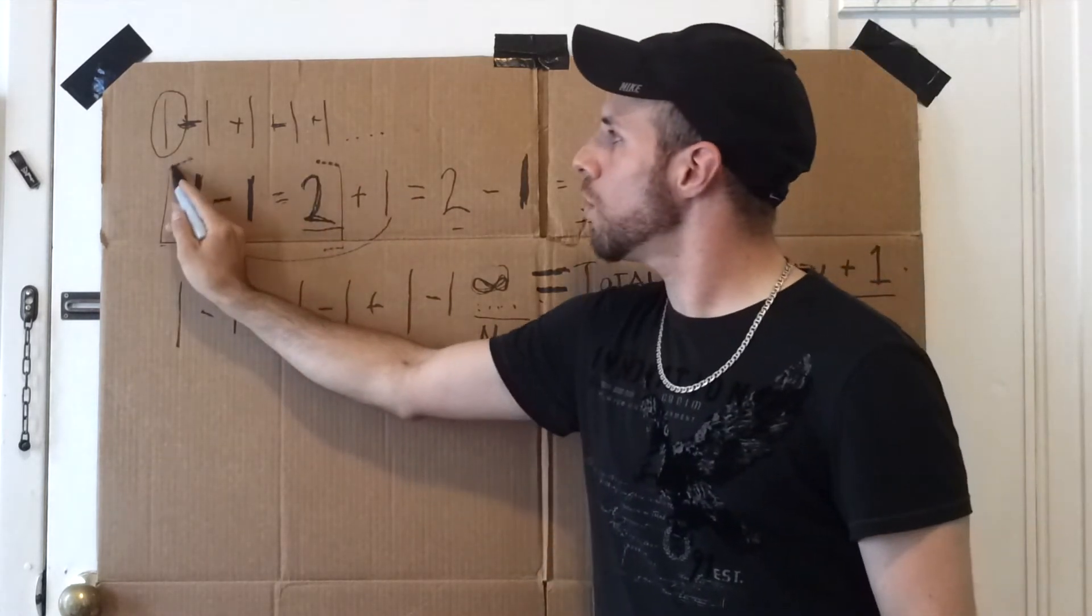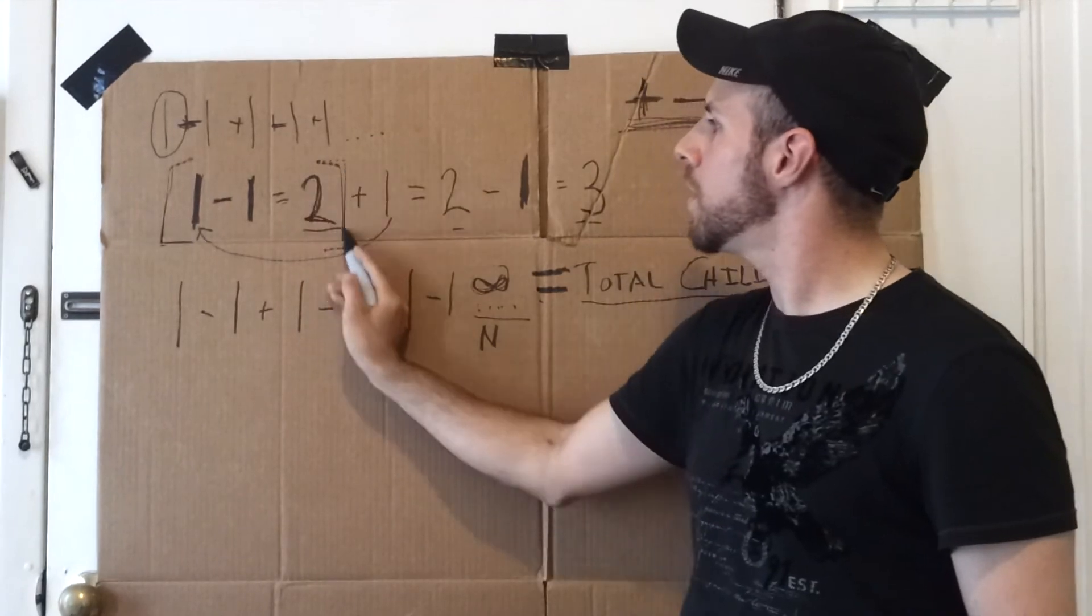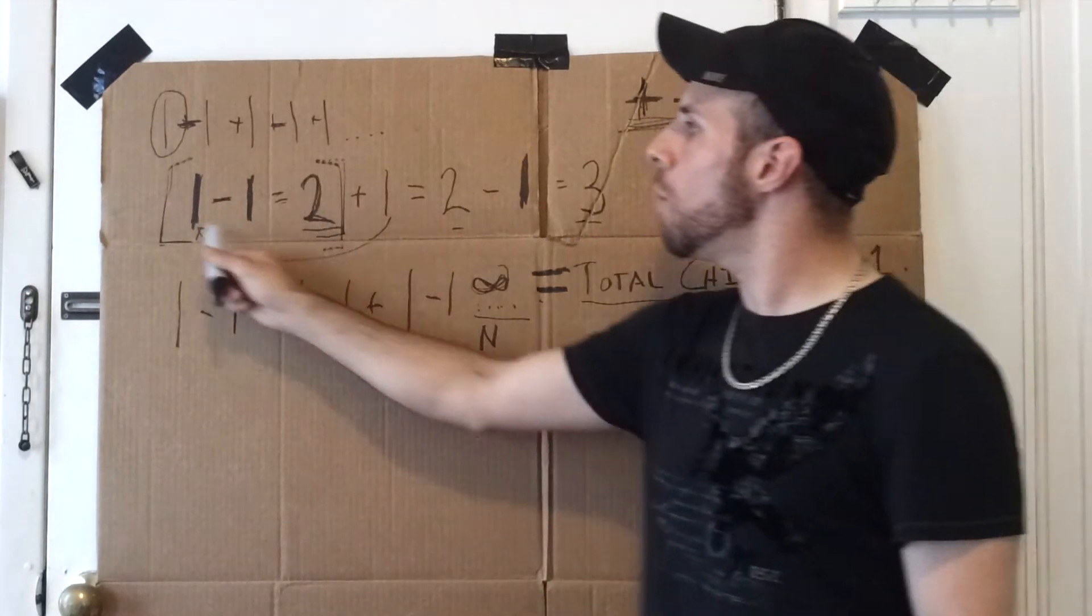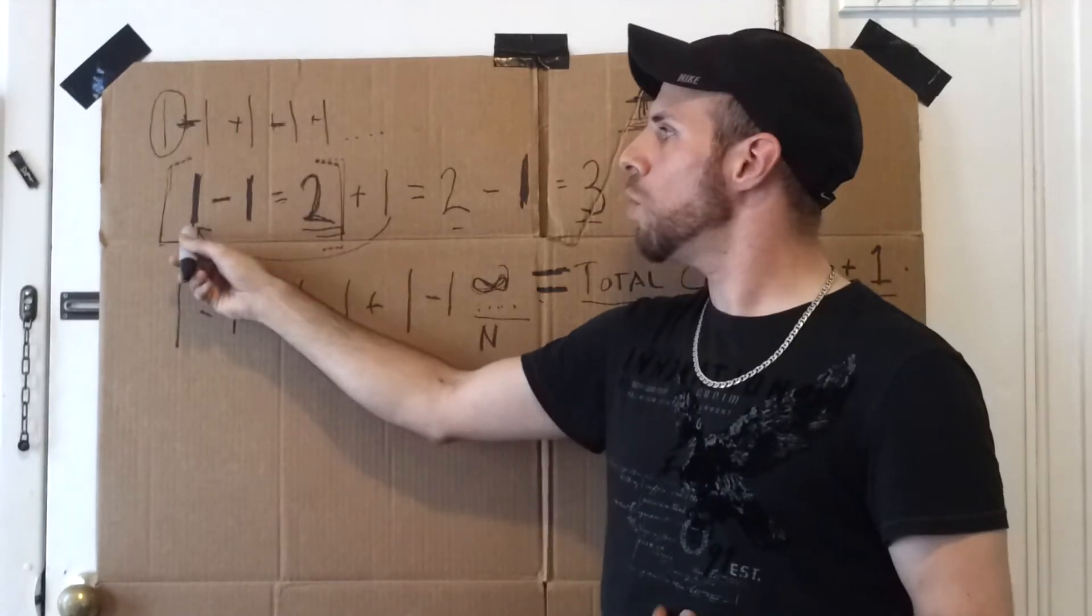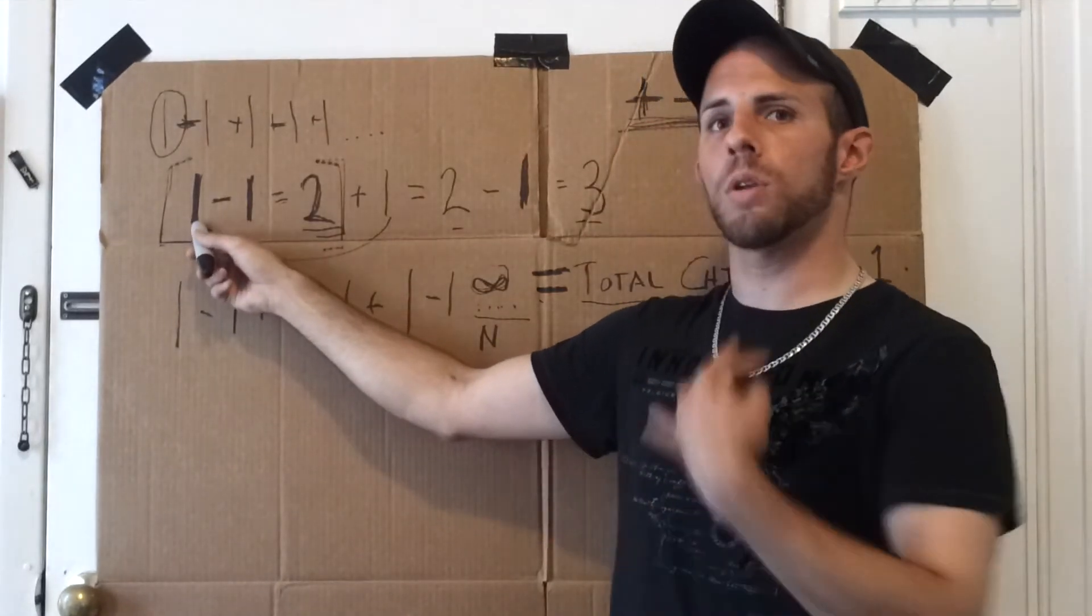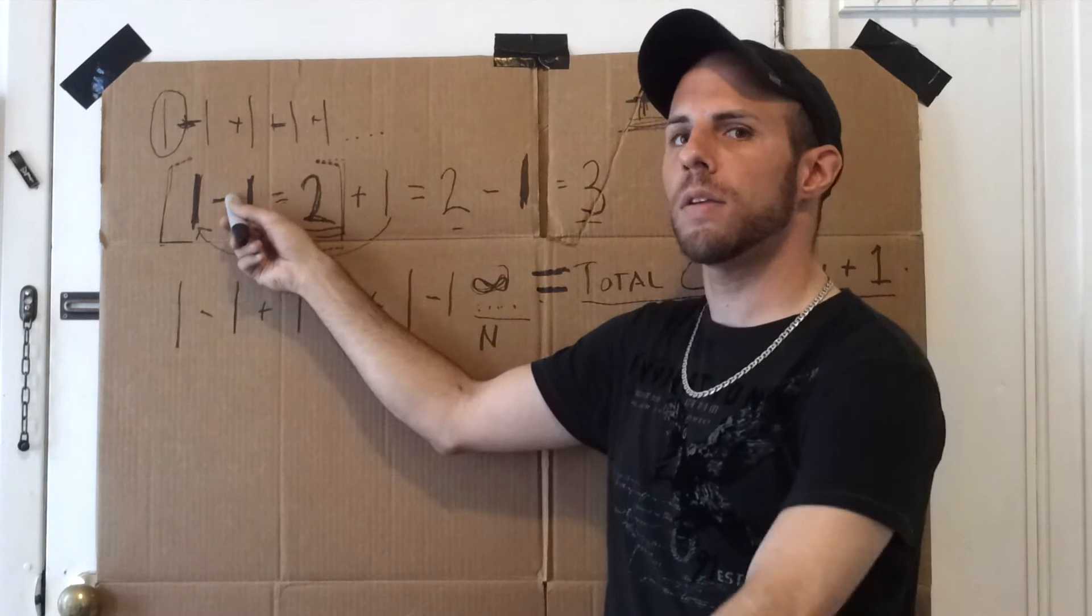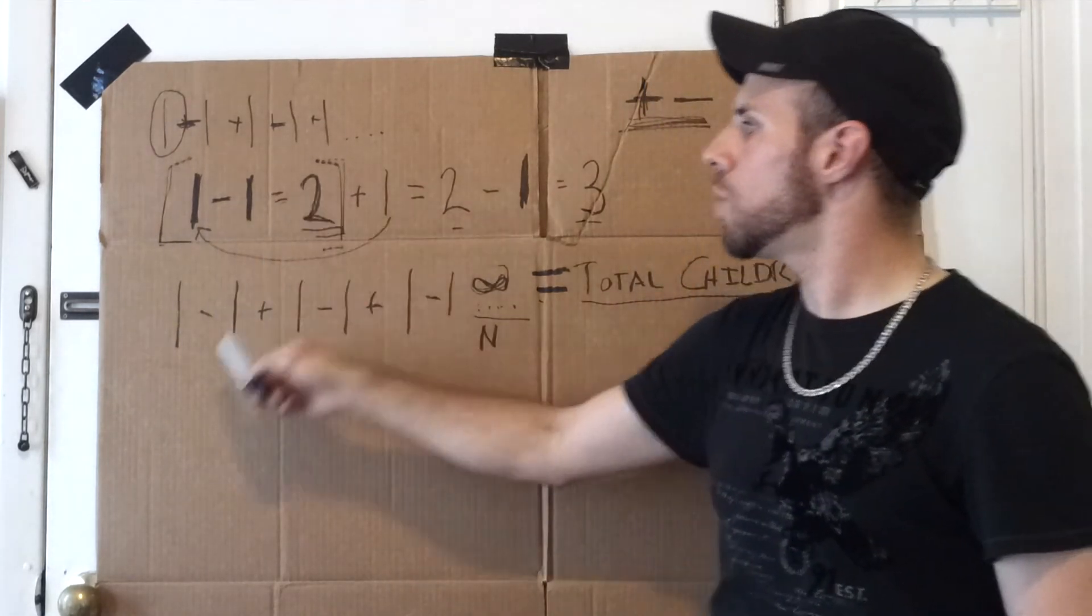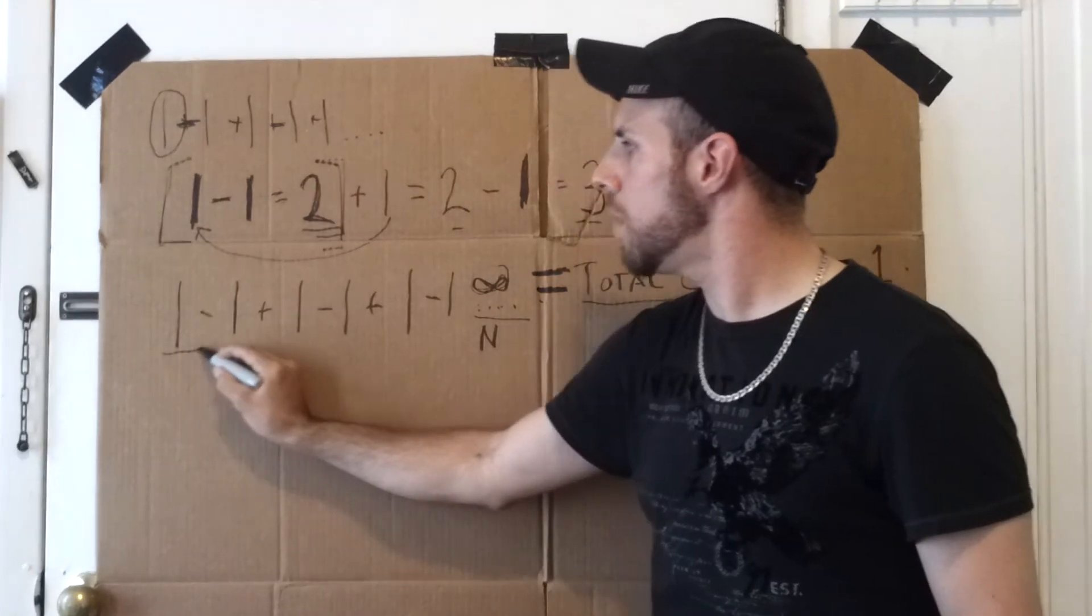So then in this equation right here, 1 minus 1 equals 2. From the woman's point of view, the pregnant woman's point of view, you would say her point of view minus her fetus equals 2 people. 1 minus 1 equals 2, the first part of his series, 1 minus 1.